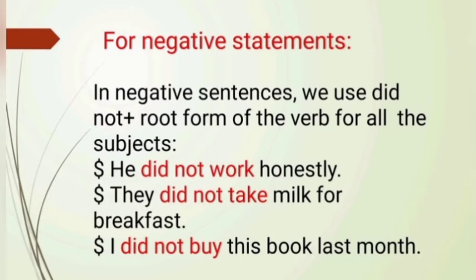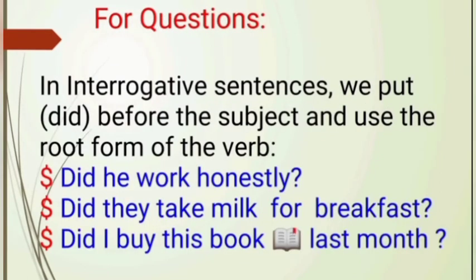In negative sentences, we use 'did not' plus root form of the verb — that means first form of the verb — for all subjects. For example: 'he did not work honestly,' 'they did not take milk for breakfast,' or 'I did not buy this book last month.' In interrogative sentences, we put 'did' before the subject and use the root form of the verb. For example: 'did he work honestly?', 'did they take milk for breakfast?', or 'did I buy this book last month?'